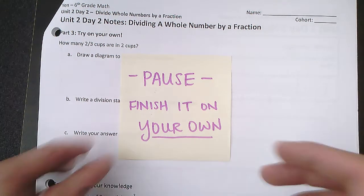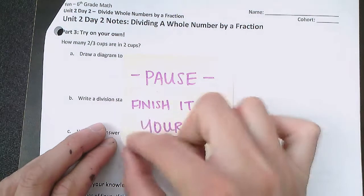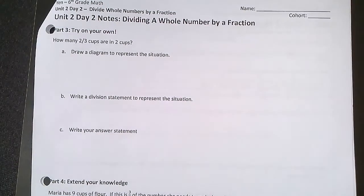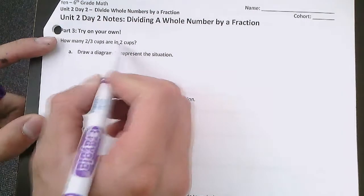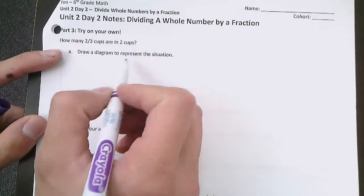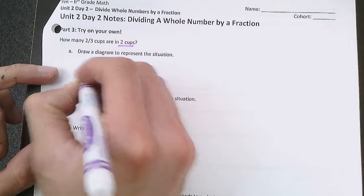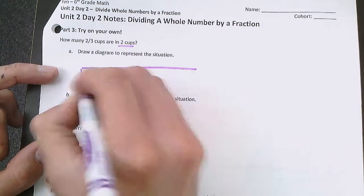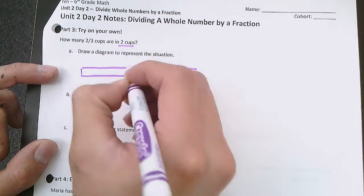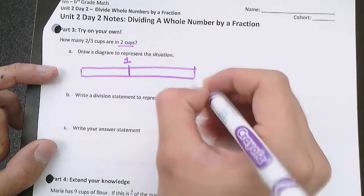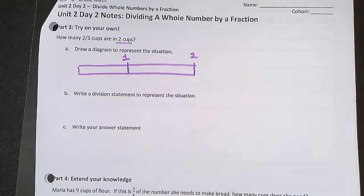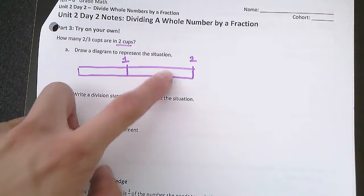Now you're resuming the video after trying it on your own, and we're going to check your work. How many two-thirds cups are in two cups? Well, we're starting with two cups, so let's draw our tape diagram for two. One whole here, two wholes here. We want to figure out how many two-thirds are in these two wholes.